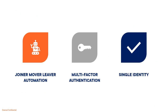Some of the obvious things you look at when thinking about maturing your identities would be implementing joiner-mover-leaver automation, enabling MFA, and consolidating accounts into a single user identity. Depending on differing agendas or priorities within a business, we find that organizations have implemented some or parts of these. While we think these are positive steps, we need to think about identities with a far more encompassing approach to fully protect your identities and therefore your data and resources.